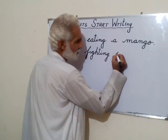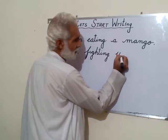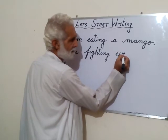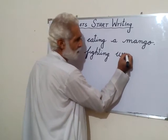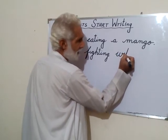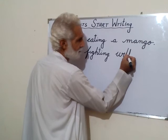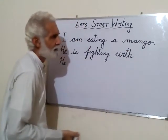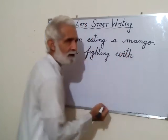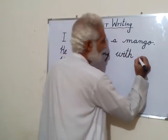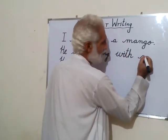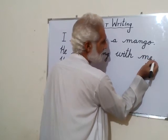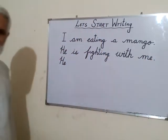Now W — we will make a beautiful W, then join I with it, then go for T, and then H — 'with.' And then 'me' — M and then E. 'He is fighting with me.'